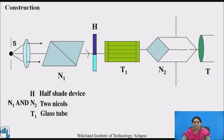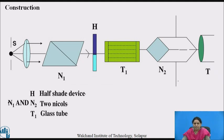Let us see the construction of the polarimeter in detail. A polarimeter consists of a glass tube for holding the solution under test, held between crossed nickel prisms. Beyond the polarizing nickel prism, a half-shade plate is located, used for accurately adjusting the two nickel prisms to the crossed position. Light from a monochromatic source is made parallel by lens L and then incident on polarizer N1. The light from the polarizer is plane polarized, then passed through a half-shade plate and through glass tube G containing the solution. The light emerging from the solution is incident on analyzer N2, observed through telescope T, and the rotation of N2 can be measured with the help of a scale.